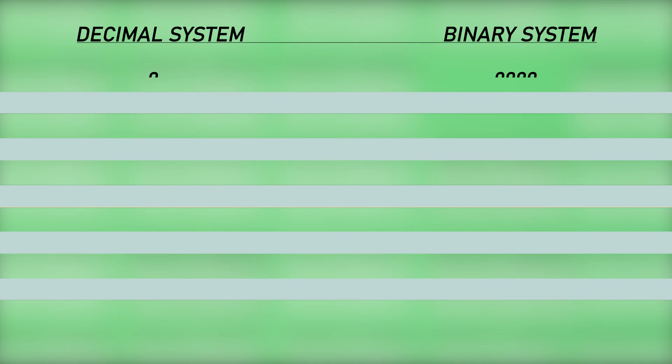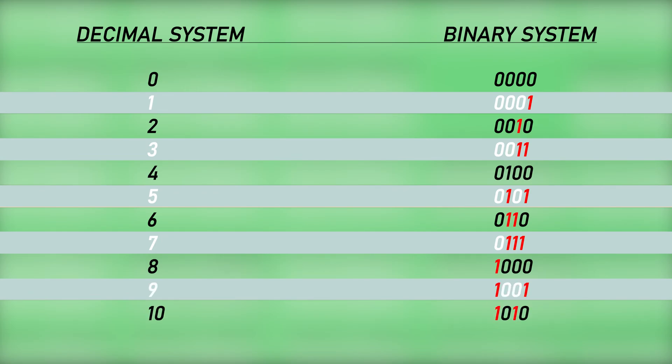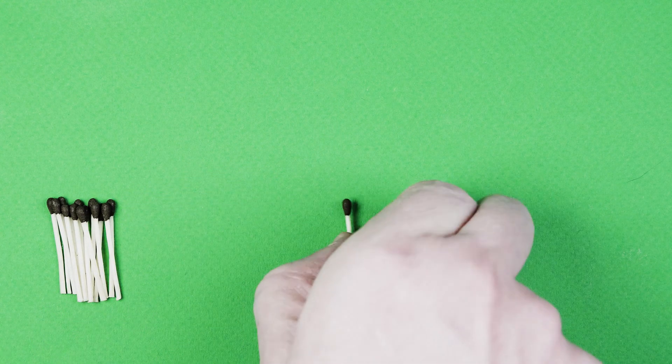As opposed to decimal, binary uses only two digits to produce numbers, and they are 0 and 1. Yet all the principles that apply to decimal system also work in binary, with the exception that we are limited to only two digits. How does that work? Let's go back to our matches and see.